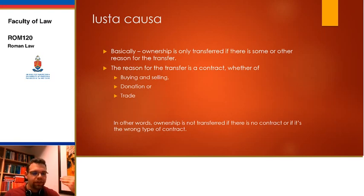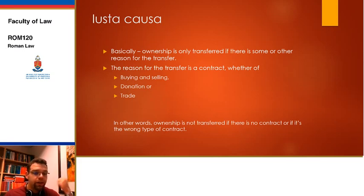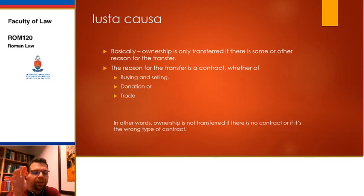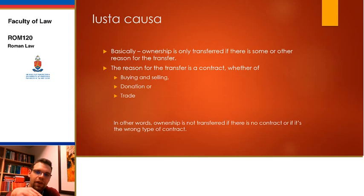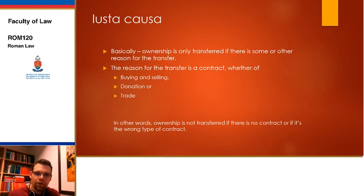Ownership is not transferred if there is no contract or if it's the wrong kind of contract. You can't just have any contract — it needs to be the right kind. For example, if you're leasing your house and the lessee decides it's now his house, there is a contract, but do we have a justa causa? No, because it's the wrong kind of contract — it's for leasing, not for gaining ownership. The contracts that generally deal with gaining ownership are buying and selling, donation, or trade.